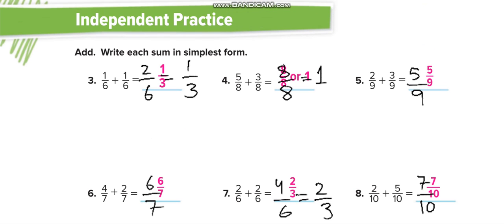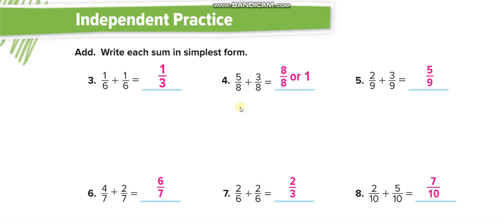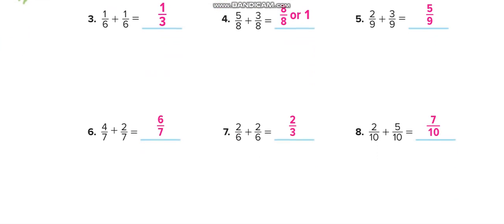Similarly, here in independent practice you have to simplify your answers also. This one, 8 over 8: any numerator and denominator that are the same means that the total parts are 8 and out of 8 parts you have all of the 8, so that is always equal to 1. Whenever you see the numerator and denominator with the same number, that is always equal to 1. So solve all these questions in independent practice and match your answers from this video.